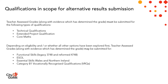Just a reminder of the qualifications which are in scope for alternative results submissions. Teacher-assessed grades along with the evidence that has determined that grade must be submitted for technical qualifications, the extended project qualification and core maths. But depending on the eligibility or whether all options have been explored first, teacher-assessed grades along with the evidence may be submitted for functional skills — Legacy 3748 as well as the Reformed 4748 qualifications — as well as ESOL, Essential Skills Wales and Northern Ireland, and the Category B1 VRQs.